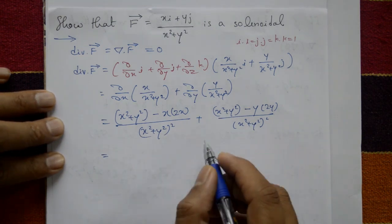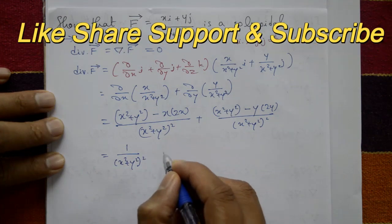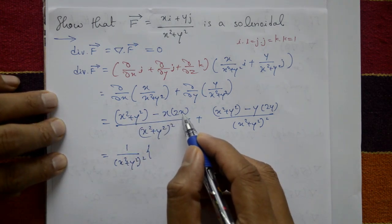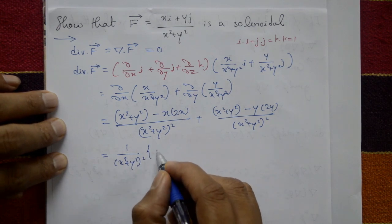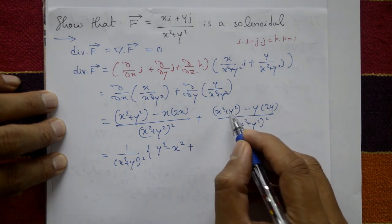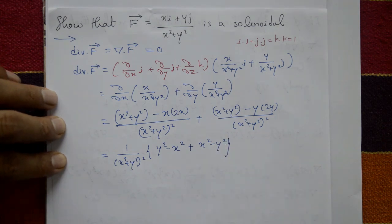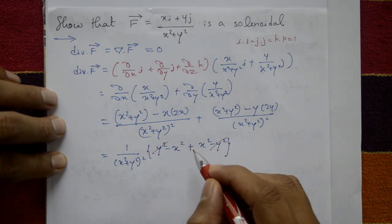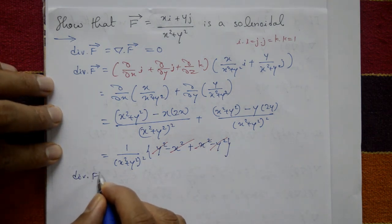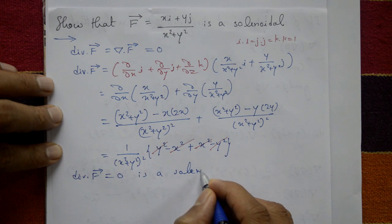Taking the common denominator (x²+y²) squared, the numerator becomes: (x²+y² − 2x²) plus (x²+y² − 2y²), which simplifies to (y²−x²) plus (x²−y²). The plus and minus terms cancel, giving divergence of F equal to 0. Therefore F is solenoidal.